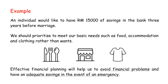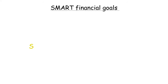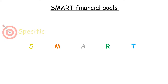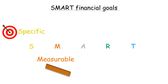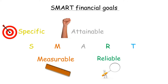Effective financial planning will help us to avoid financial problems and have adequate savings in the event of an emergency. Financial goals set based on the SMART concept will help us control our spending in order to achieve the desired financial goals. The 5 key components are: Specific, Measurable, Attainable, Reliable, and Time-bound.